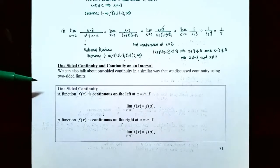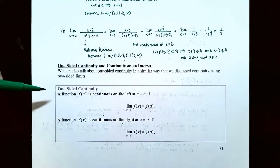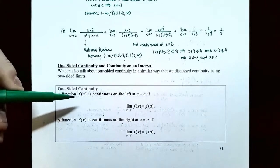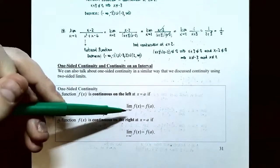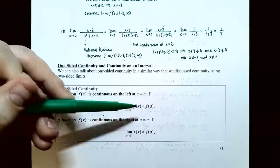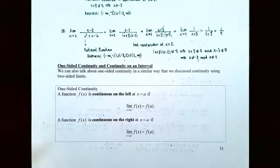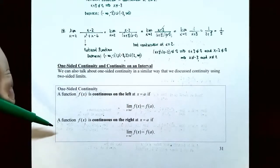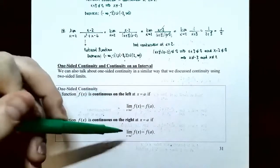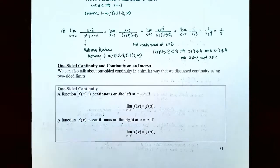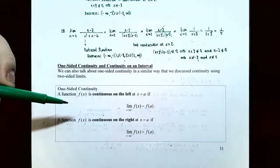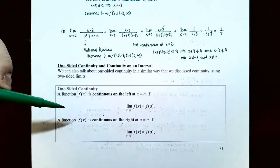We left off at one-sided continuity and continuity on an interval. We can talk about one-sided continuity similarly to how we discuss continuity using two-sided limits. A function is continuous on the left at x equals a if the limit as x approaches a from the left of f(x) equals f(a). A function is continuous on the right at x equals a if the limit as x approaches a from the right of f(x) equals f(a).